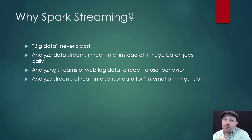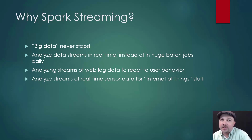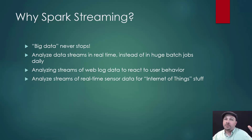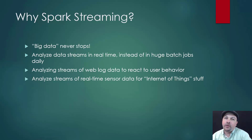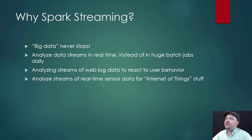Another hot application of Spark streaming is the Internet of Things. Imagine you have streams of data coming from lots and lots of sensors as part of some sort of IoT application. You could use Spark streaming to aggregate all that sensor information into one place at a very large scale in a very reliable manner. So Spark streaming is also an enabling technology for the vision of the Internet of Things.